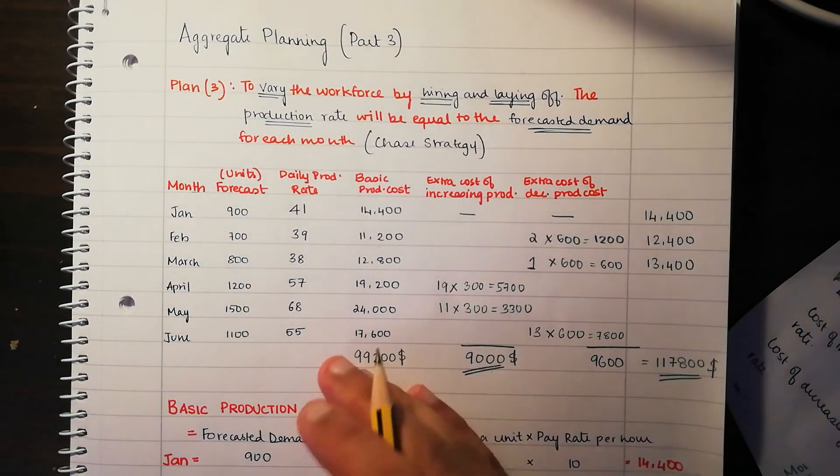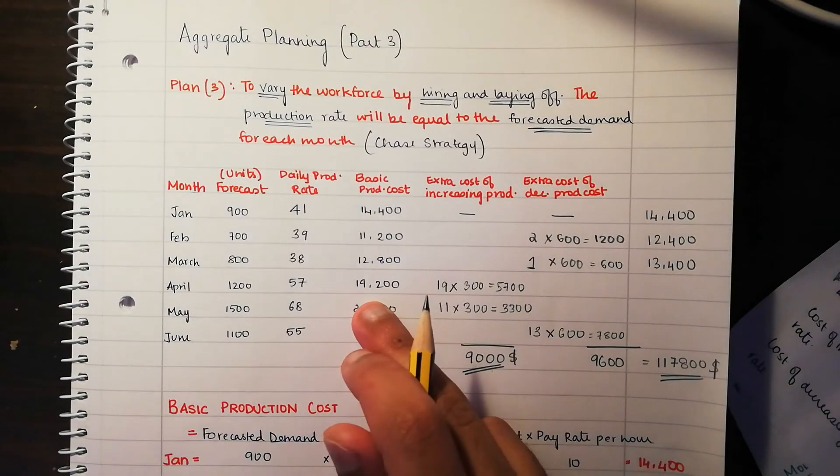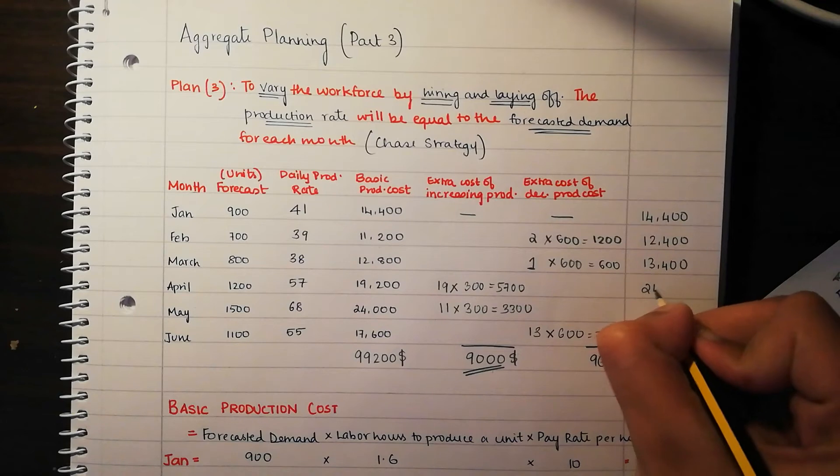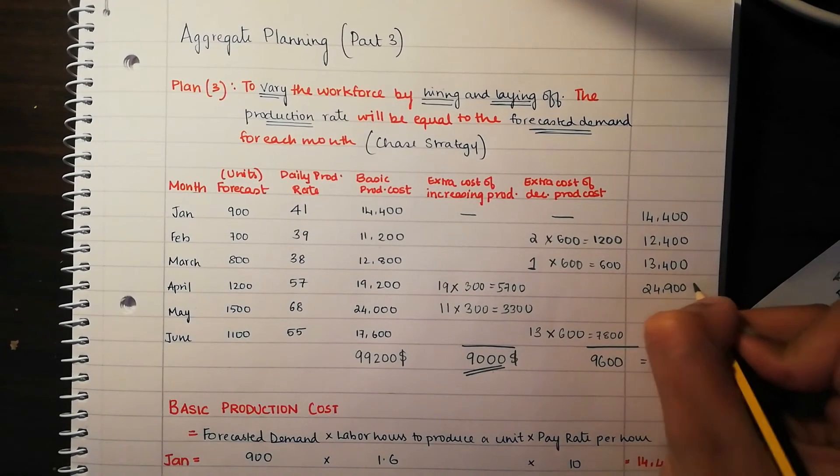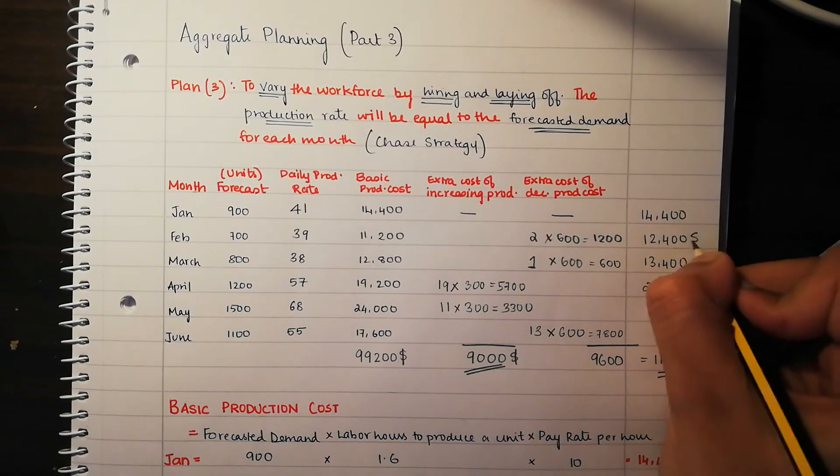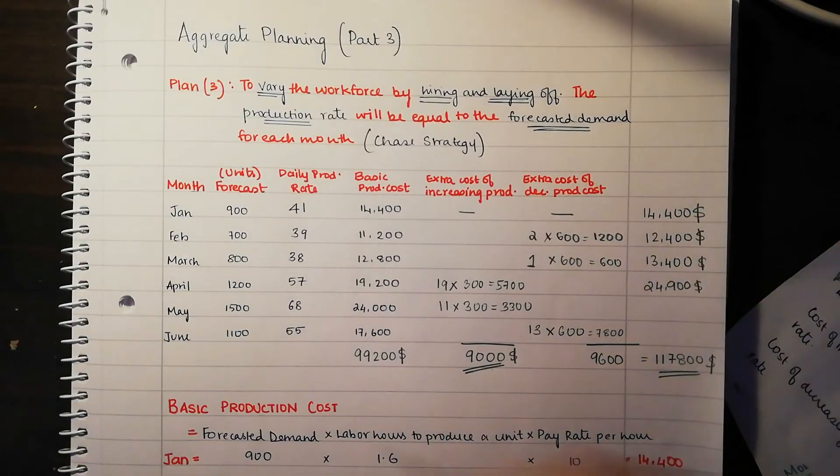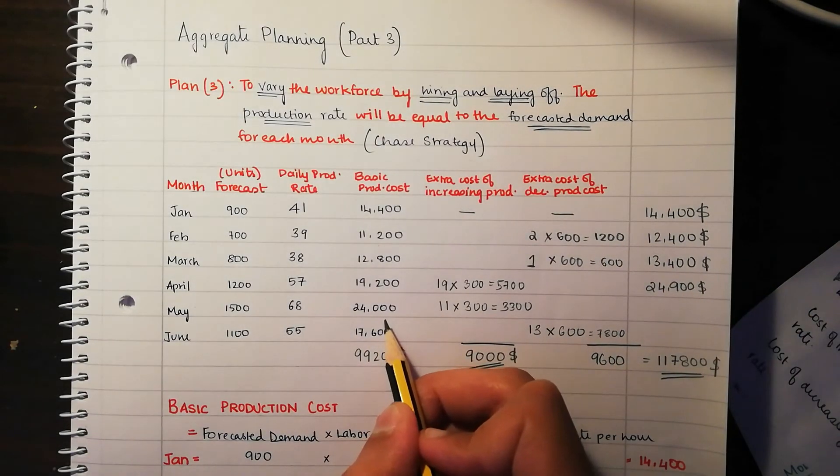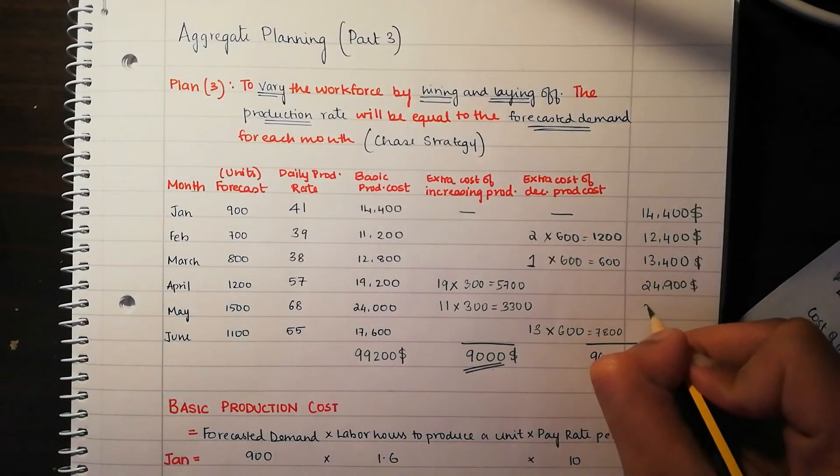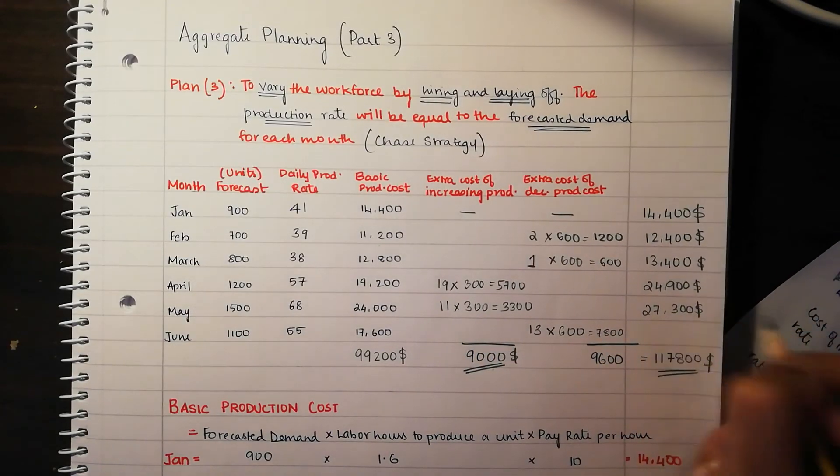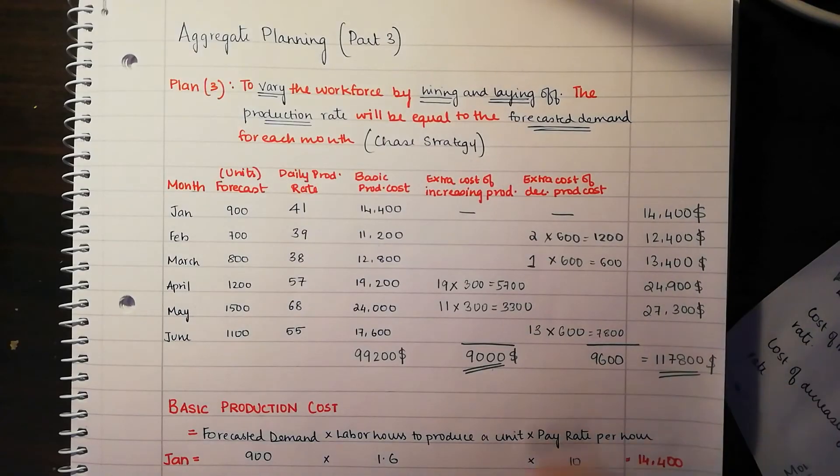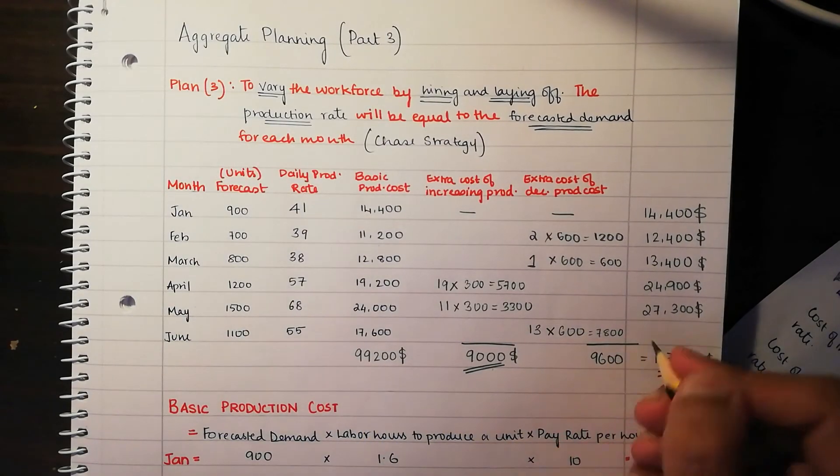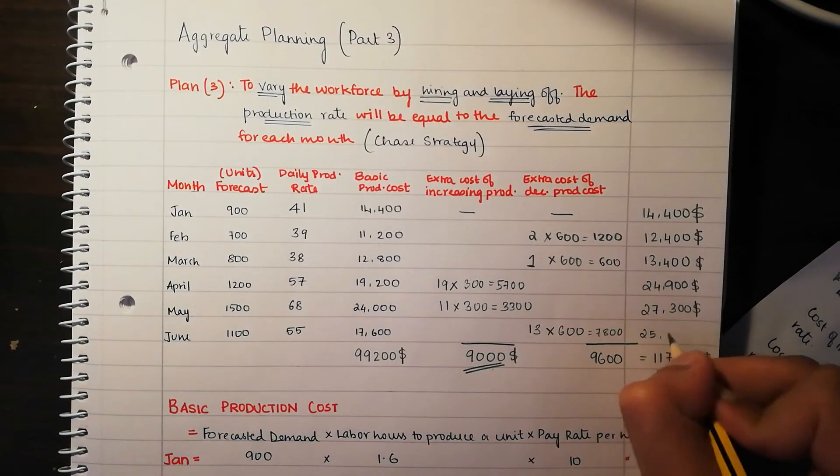For April, the same way, $19,200 plus $5,700, which is going to be $24,900. And same here, which is going to be $24,000 plus $3,300, which is going to be $27,300. Finally in June, $17,600 plus $7,800, which is going to be $25,400.